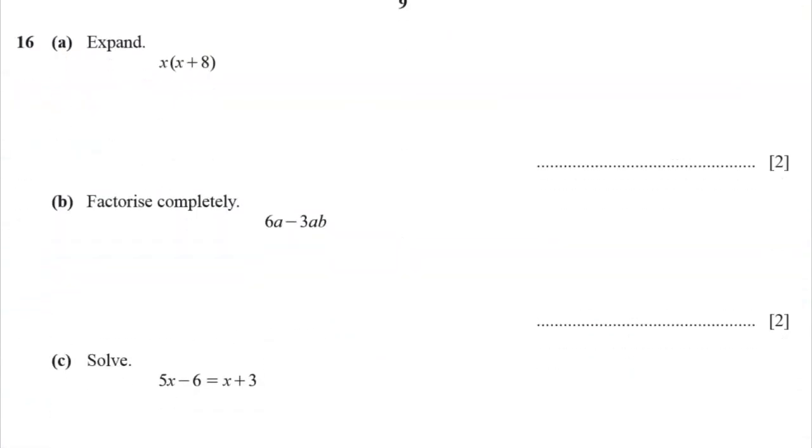Question 16. Expand. It doesn't mean that you should do x times x plus 8. That's not what they want us to do. What they want us to do is multiply the outside by every term on the inside. And that gets x times x is x squared. And x times 8 is 8x. So we have x squared plus 8x.